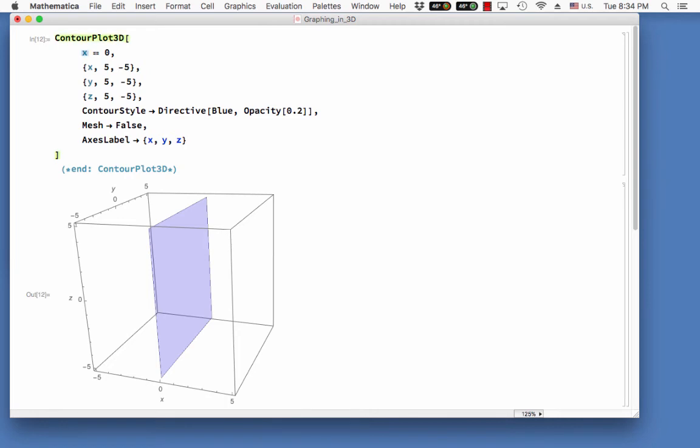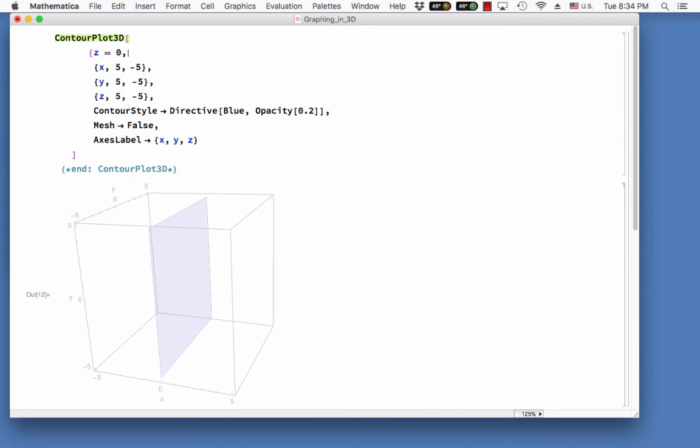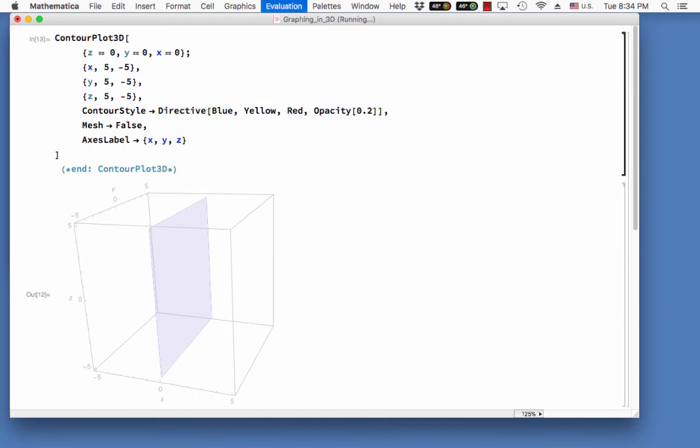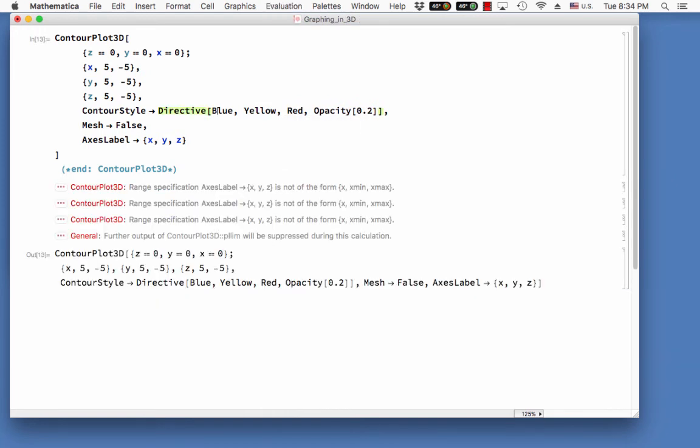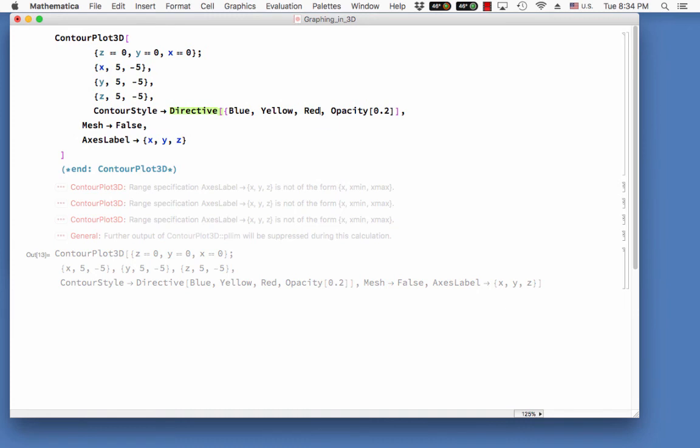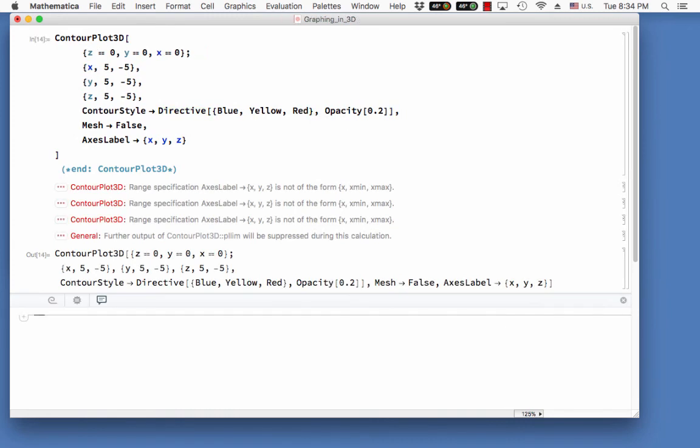Let's do all of these together. Let's do what we call the XY plane, the XZ plane, and then finally the YZ plane. And then maybe we want to do three colors. Let's go yellow and red. I think it's getting mad at me because... Maybe I can't.